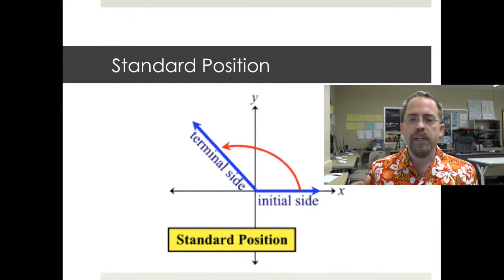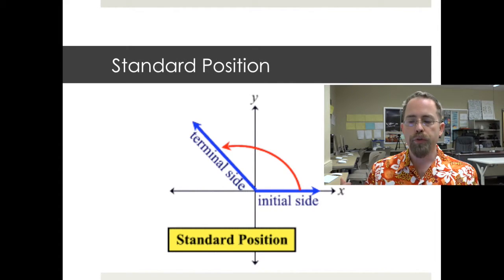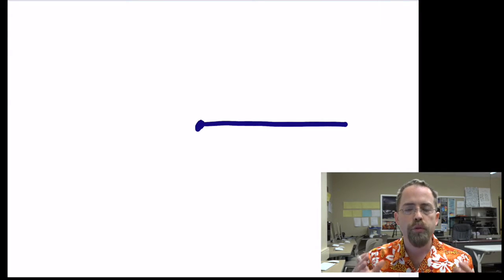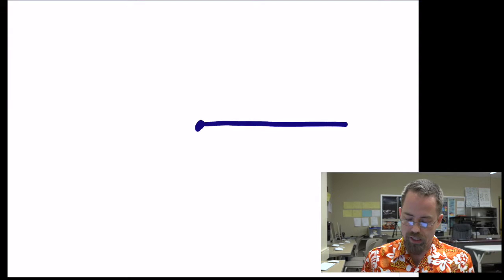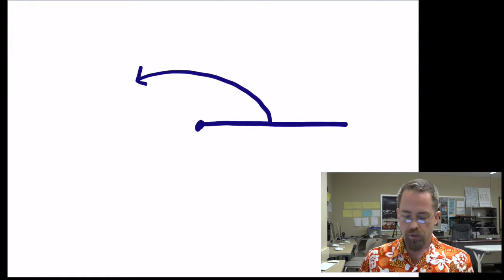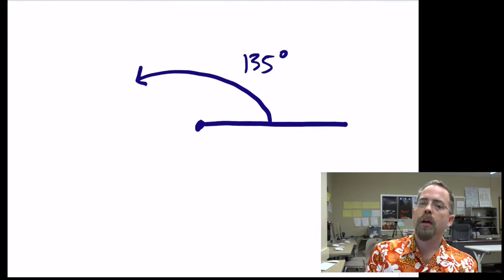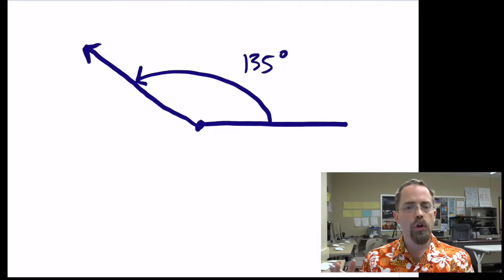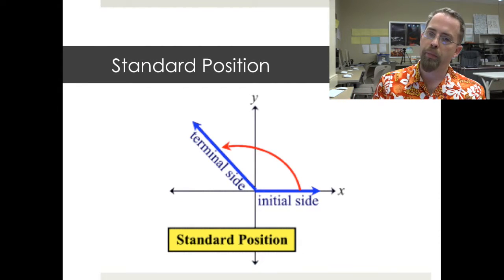So the first thing that we need to be able to do is make sure that we're talking about the same angle. We need to be able to draw them and graph them and communicate with one another. In math we always draw our angles starting off going to the right. That's sort of home base. If you think about 3 o'clock on a clock, that's where we begin. And then unlike a clock, we proceed in a counterclockwise direction. So this angle of maybe 135-ish needs to start at the 3 o'clock position and then rotate counterclockwise. This is what is called standard position.